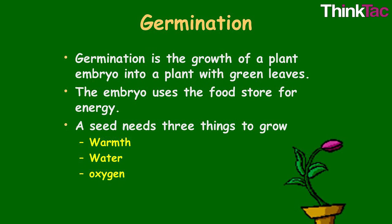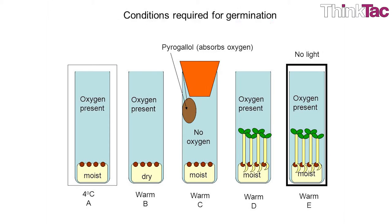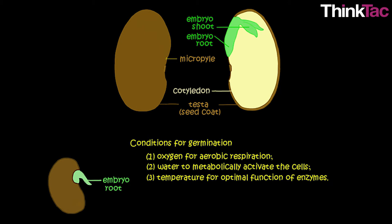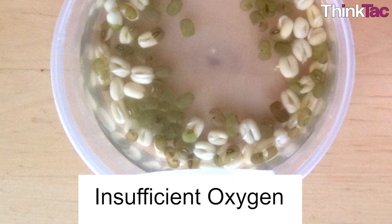Oxygen is required by the seed to carry out its metabolic processes that activate enzymes and break down complex compounds. Without oxygen, many enzymes in the seed will not function, and as a result the seed wouldn't germinate. Insufficient oxygen, as in the case of the seeds at the bottom of your activity setup, will result in incomplete germination.